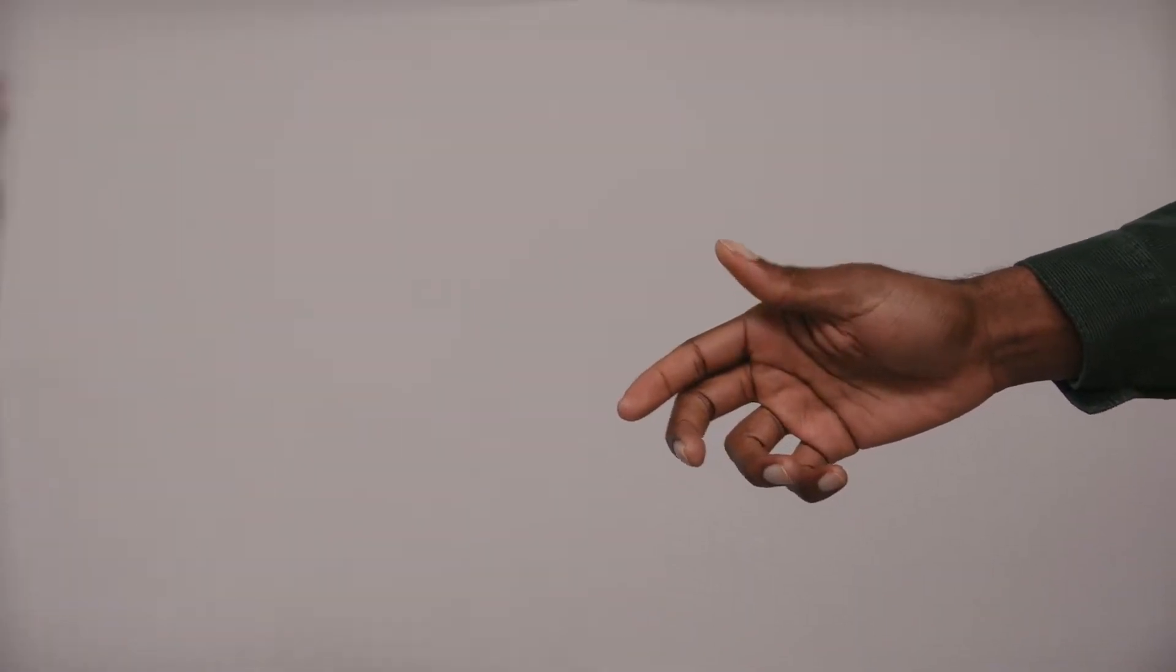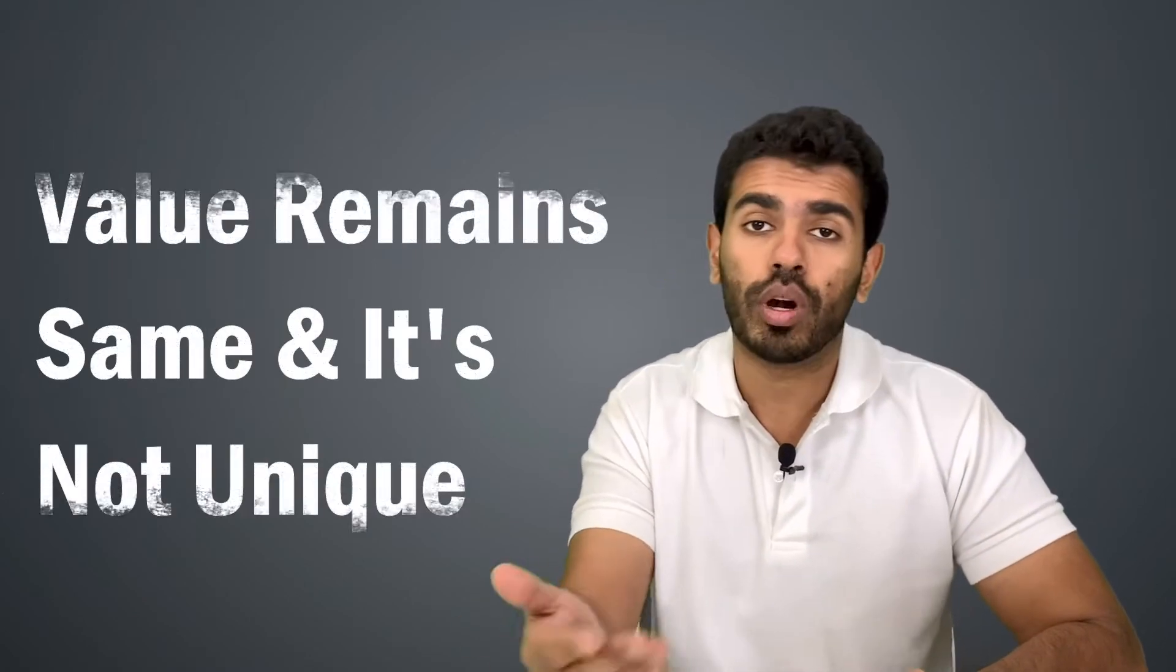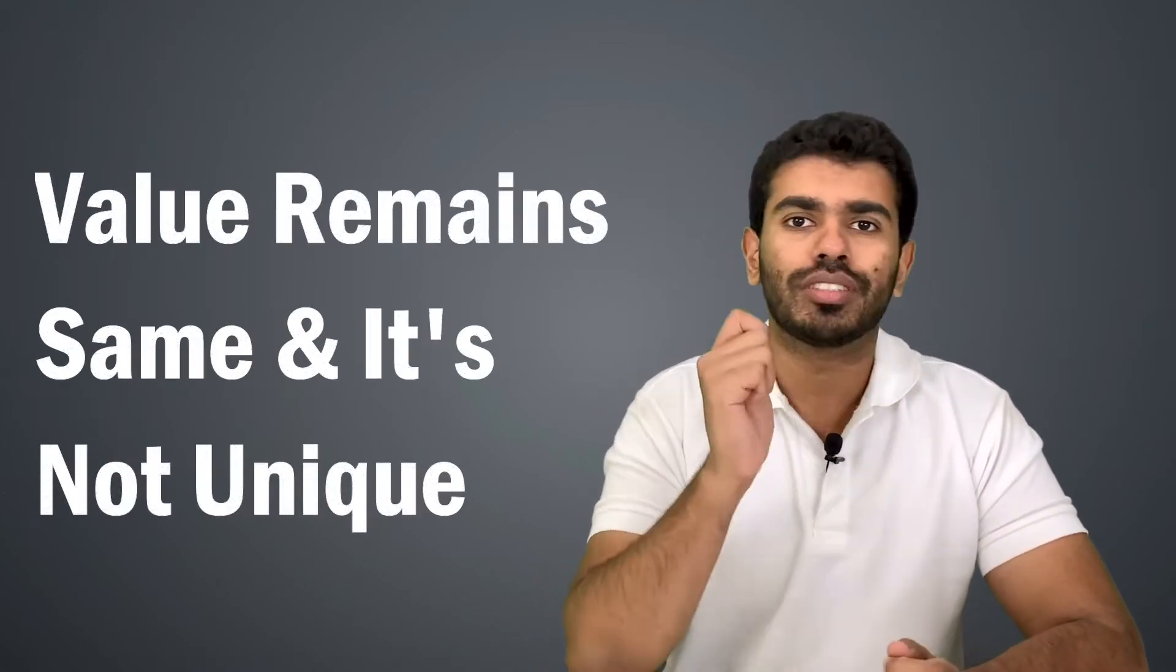For example, if you tomorrow give me a $100 bill, I can give back to you two $50 bills or ten $10 bills. So it still holds the same value of what you actually gave me. So it's not unique, it is replaceable. Hence, it is a physical form of a fungible asset.